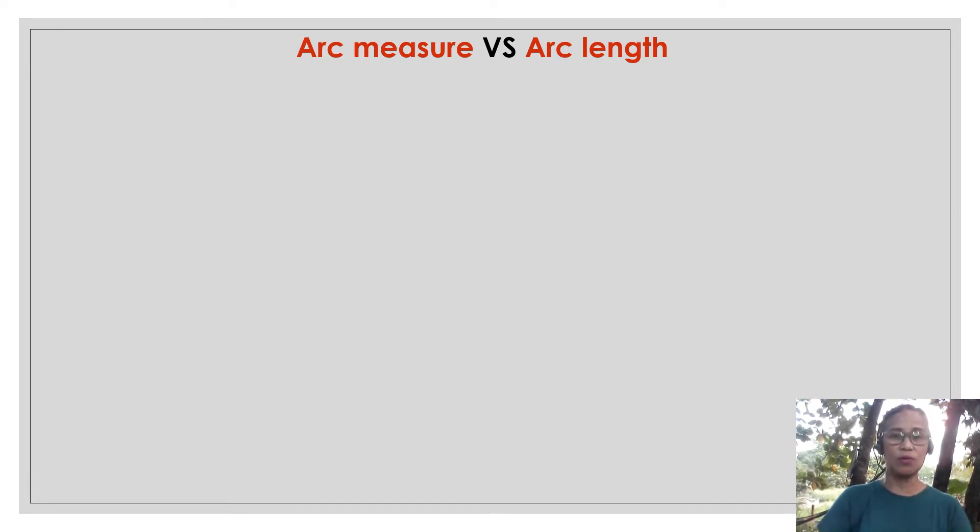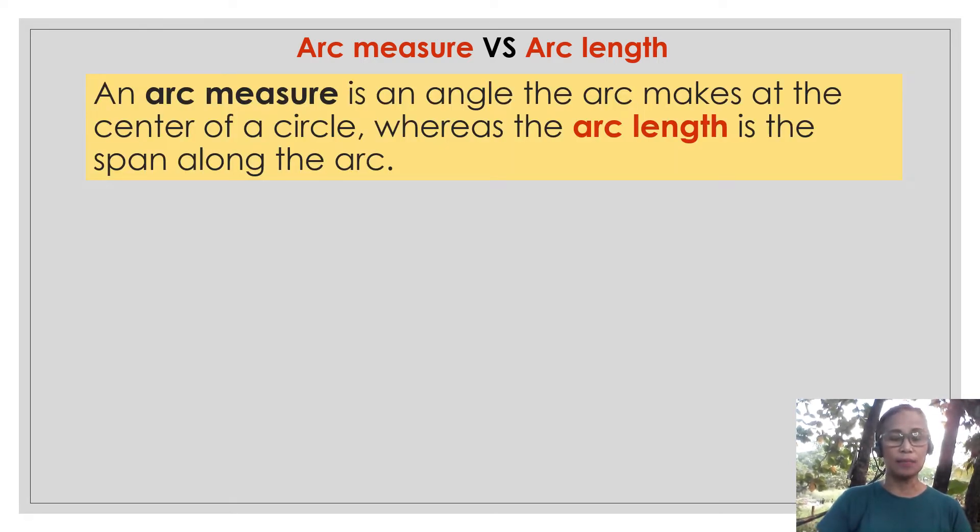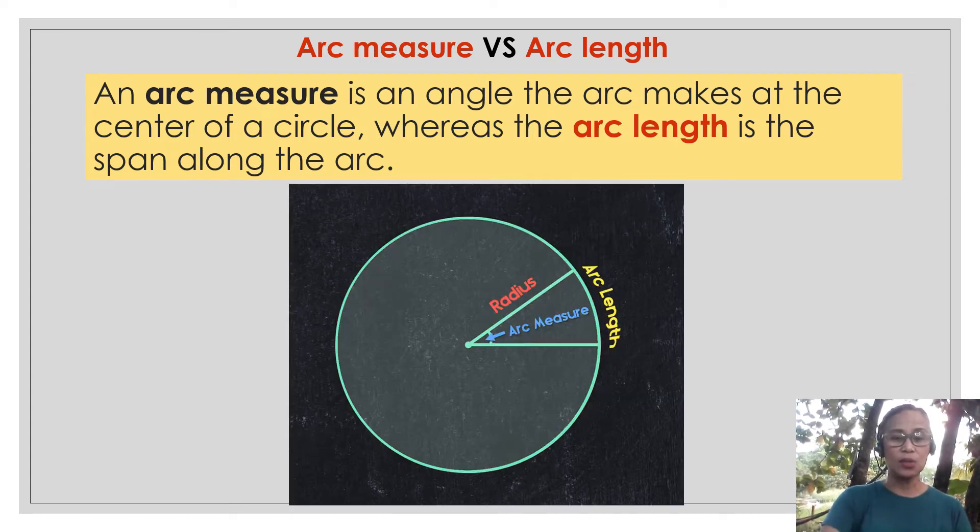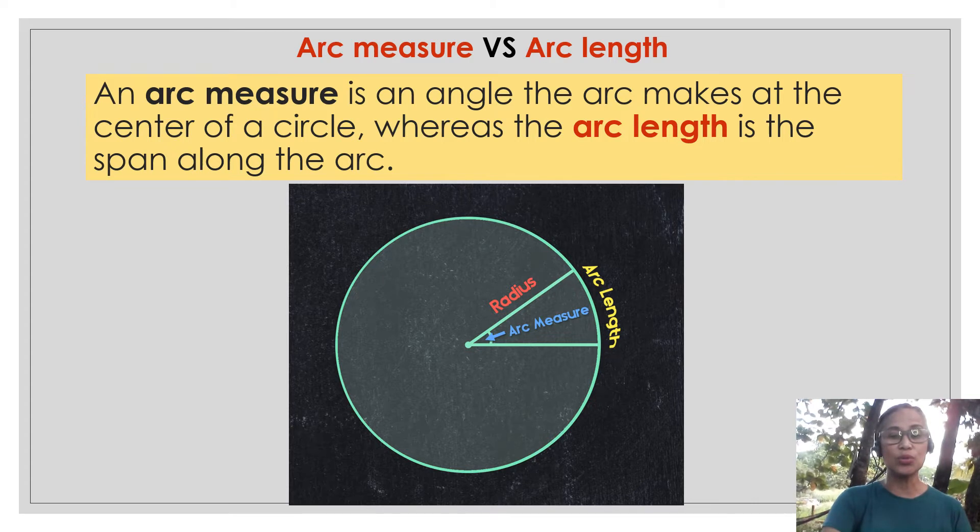In my previous video, I was able to teach arc measure. Arc measure is the degree measure that an arc makes from the central angle. While the arc length is the length of the intercepted arc when flattened and it is measured in units of length. So example here, the arc measure is the angle that an arc makes at the center and the arc length is the measure of the intercepted arc here when flattened.